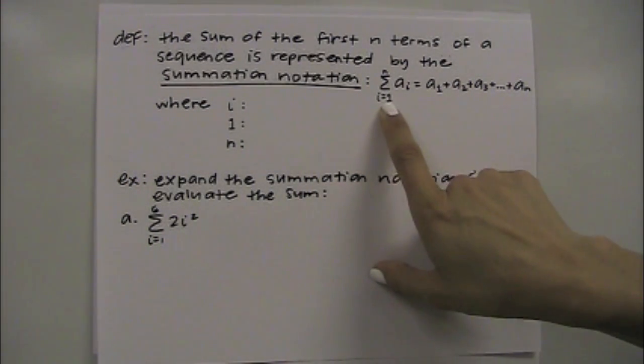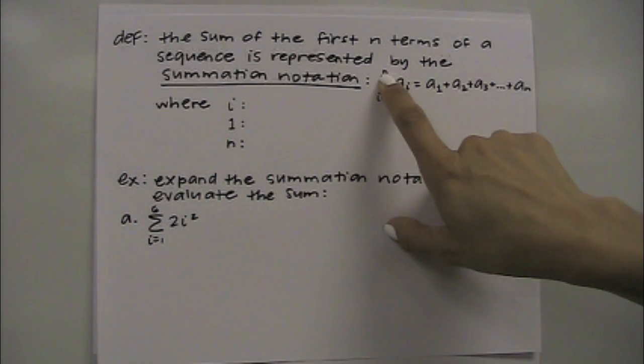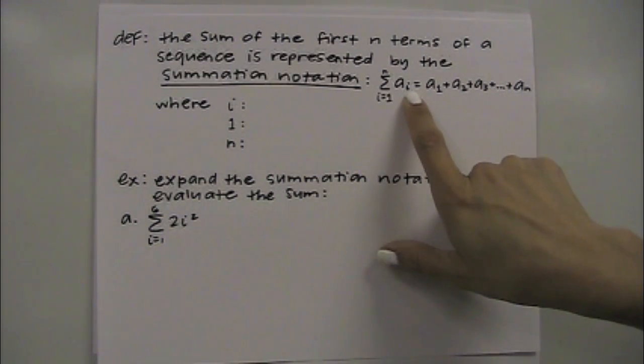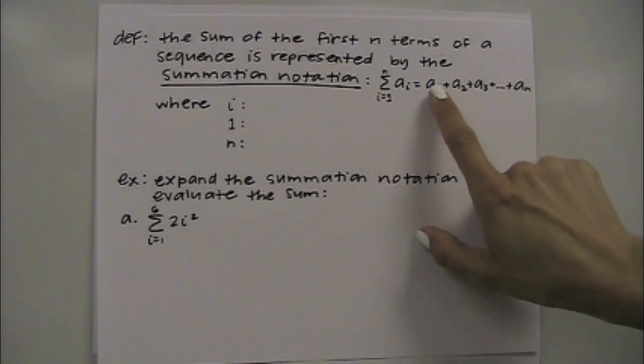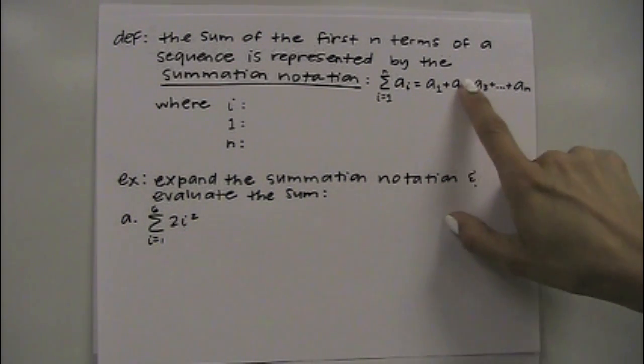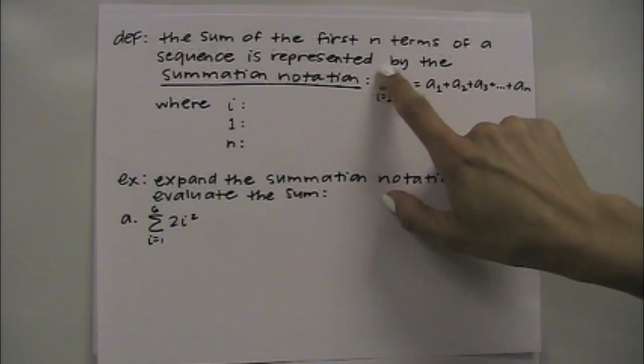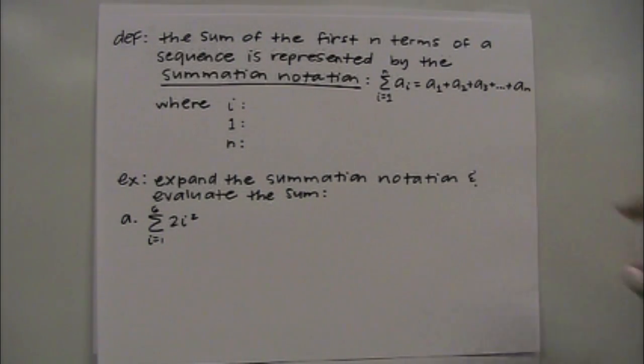On the bottom you have i equals 1. On top you have an n. This is a sub i, and it's equal to whatever number is down here you plug it in, and so it's a sub 1 plus a sub 2 plus a sub 3 plus dot dot dot, all the way to whatever this value on top is. So we stop with that a sub n.